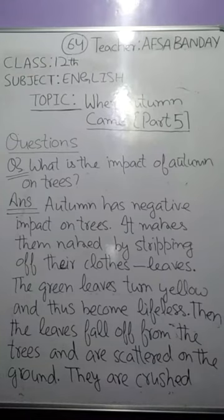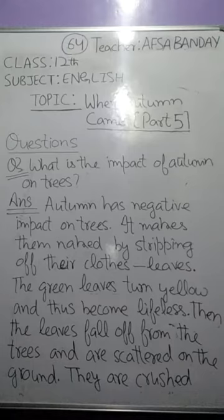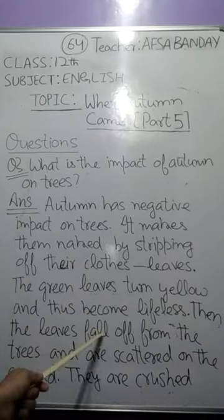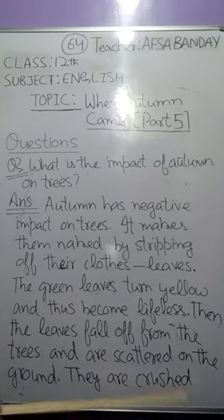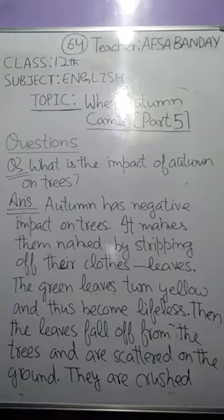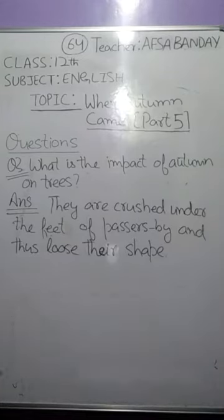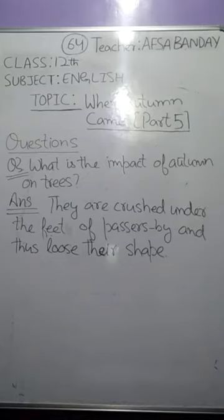Question number three: what is the impact of autumn on trees? Autumn has a negative impact on trees. It makes them naked by stripping off their leaves. With the arrival of autumn, the green leaves turn yellow, become lifeless, and then fall off. They are scattered on the ground and get crushed under the feet of passers-by, losing their shape. They don't even fight back for their survival.